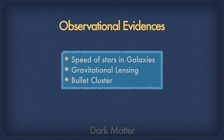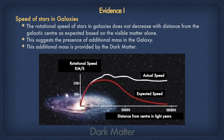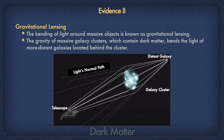Let's talk about 3 major observational evidences of dark matter: the speed of stars in galaxies, gravitational lensing, and the bullet cluster. The rotational speed of stars in galaxies does not decrease with distance from the galactic center as expected based on visible matter alone, suggesting the presence of additional mass provided by dark matter. The bending of light around massive objects coming from a distant star is called gravitational lensing — it feels as if there is a lens kept between the telescope and the distant star. The gravity of massive galaxies or clusters containing dark matter has been observed to bend the light coming from more distant galaxies.